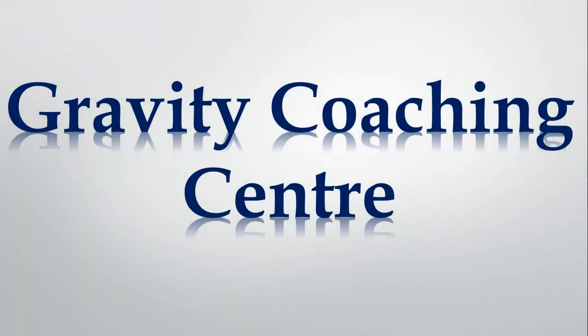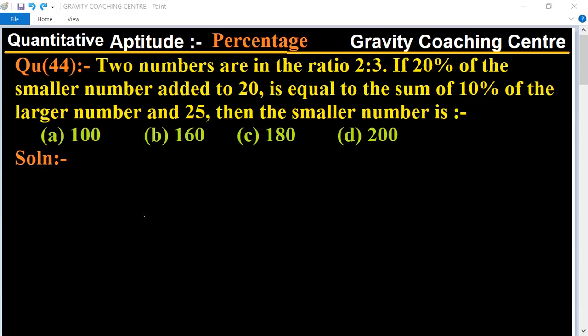Welcome to our channel Gravity Coaching Centre, quantitative aptitude chapter percentage, question number 44. Two numbers are in the ratio 2 is to 3. If 20% of the smaller number added to 20 is equal to the sum of 10% of the larger number and 25, then the smaller number is - let two numbers be 2x and 3x.